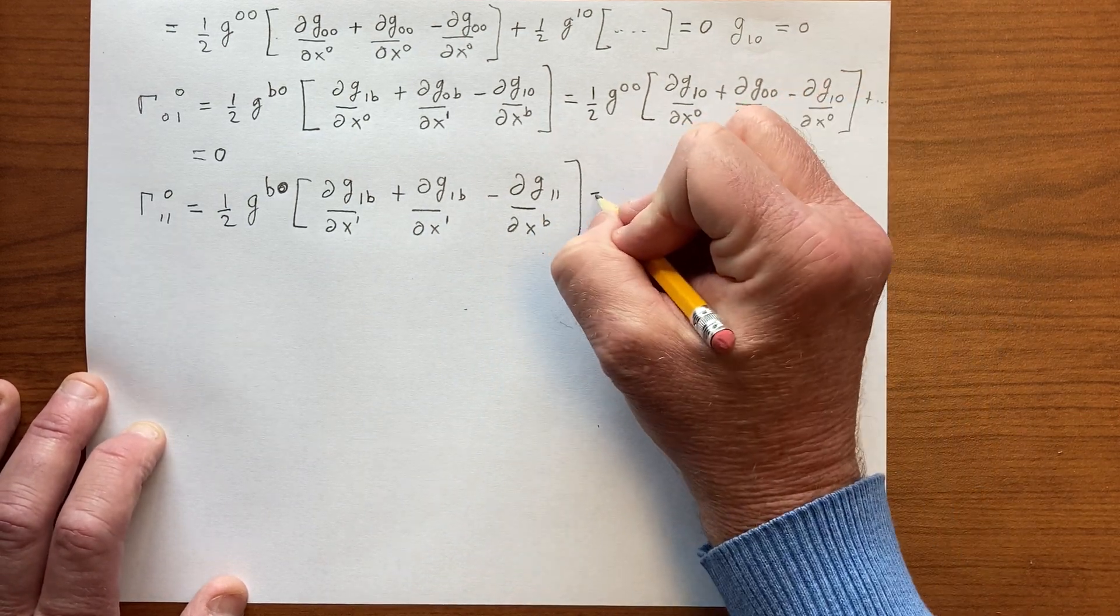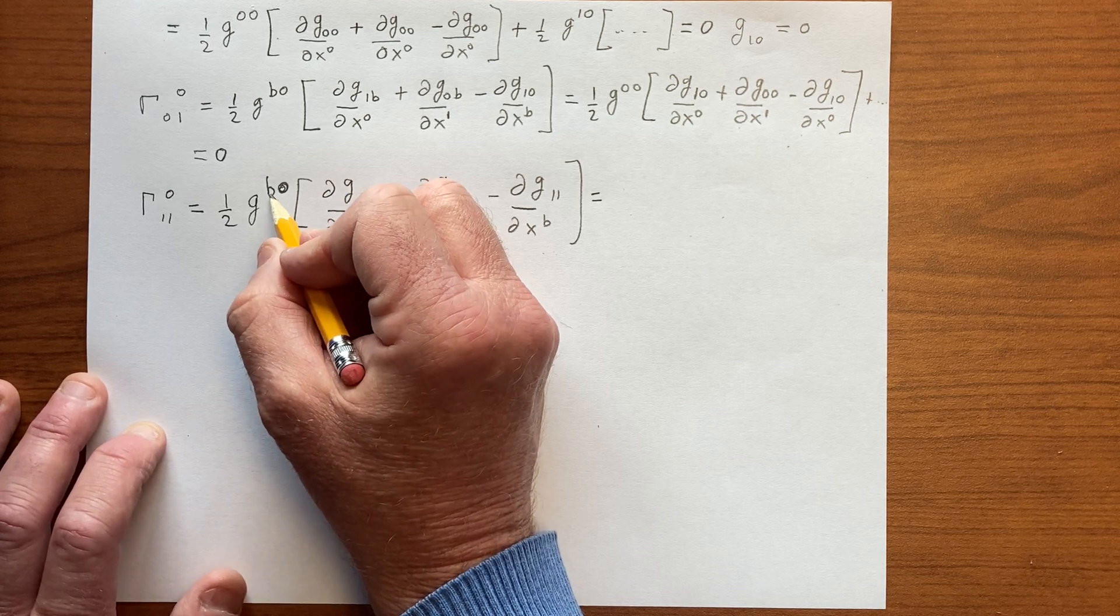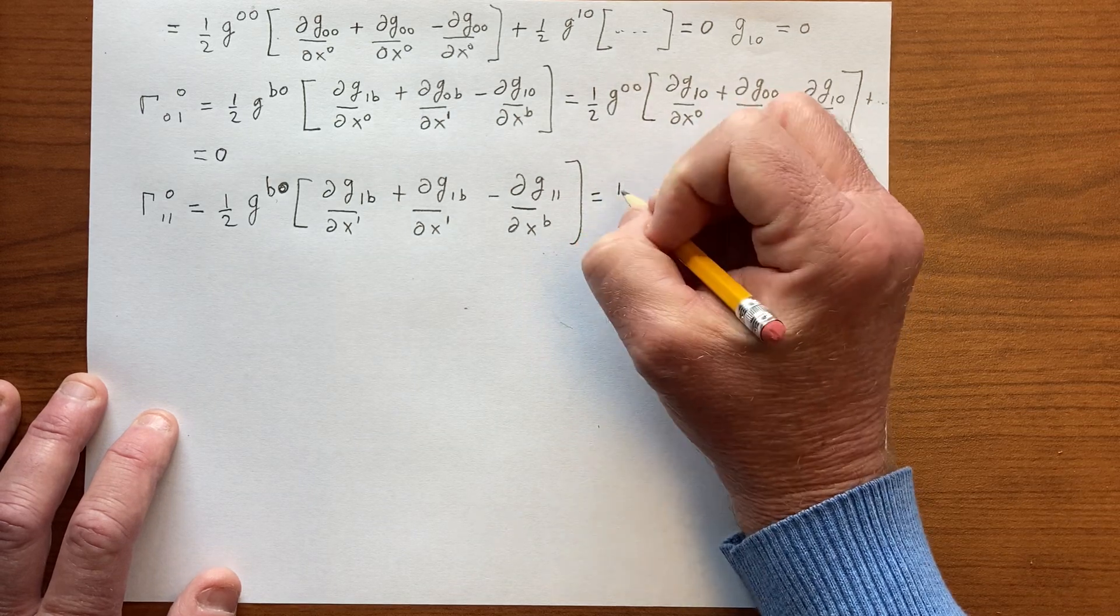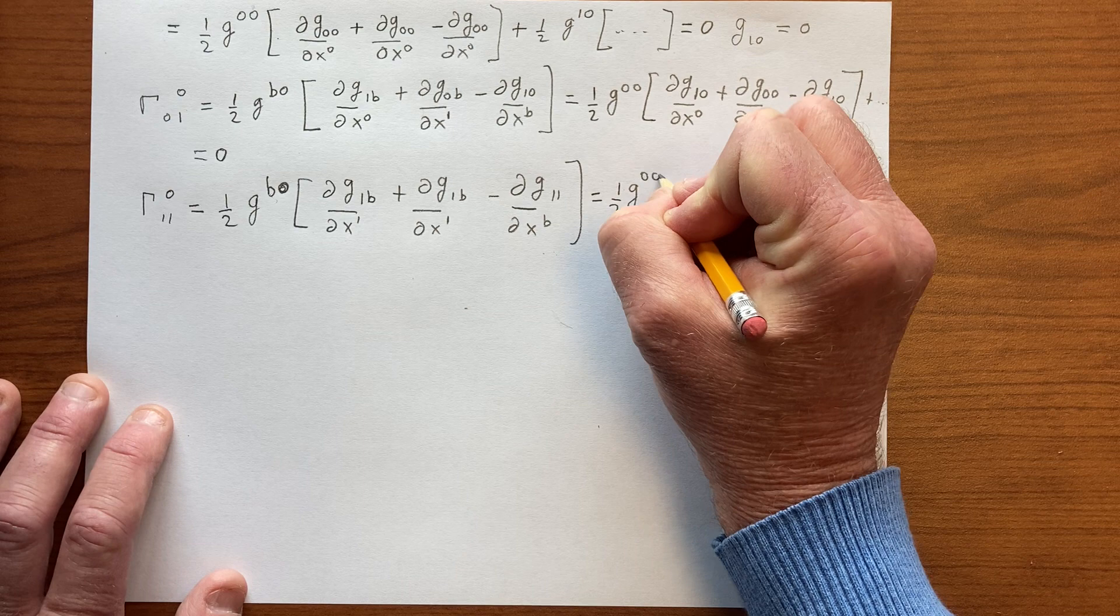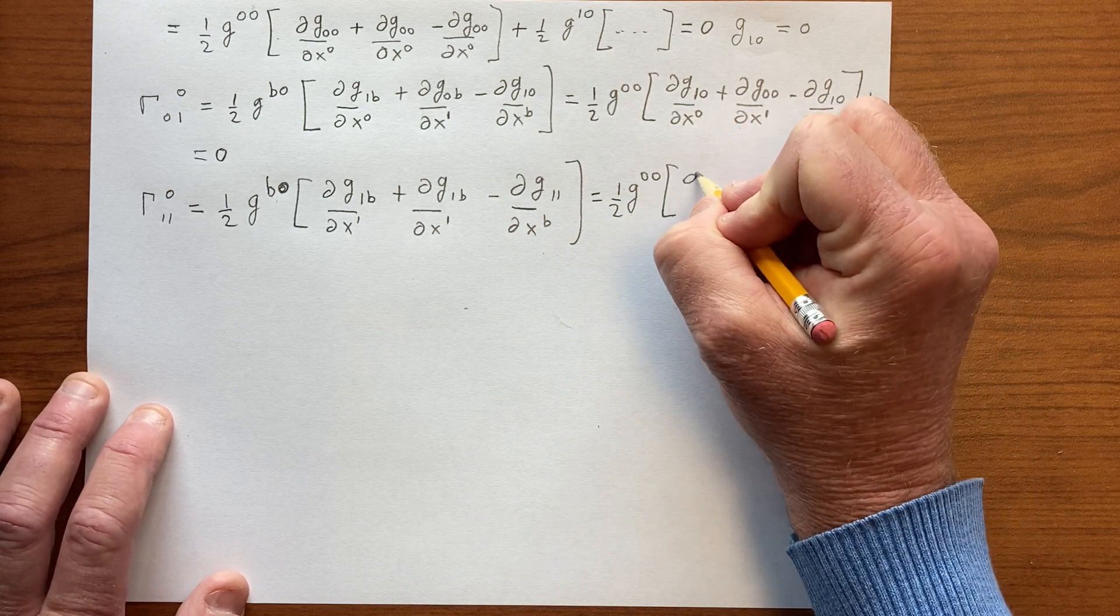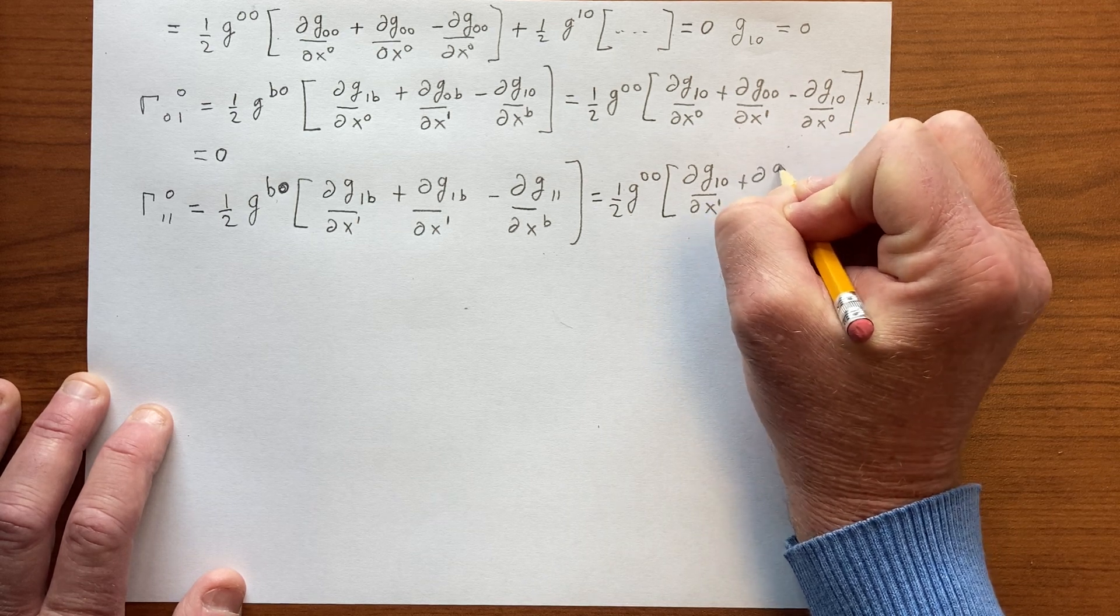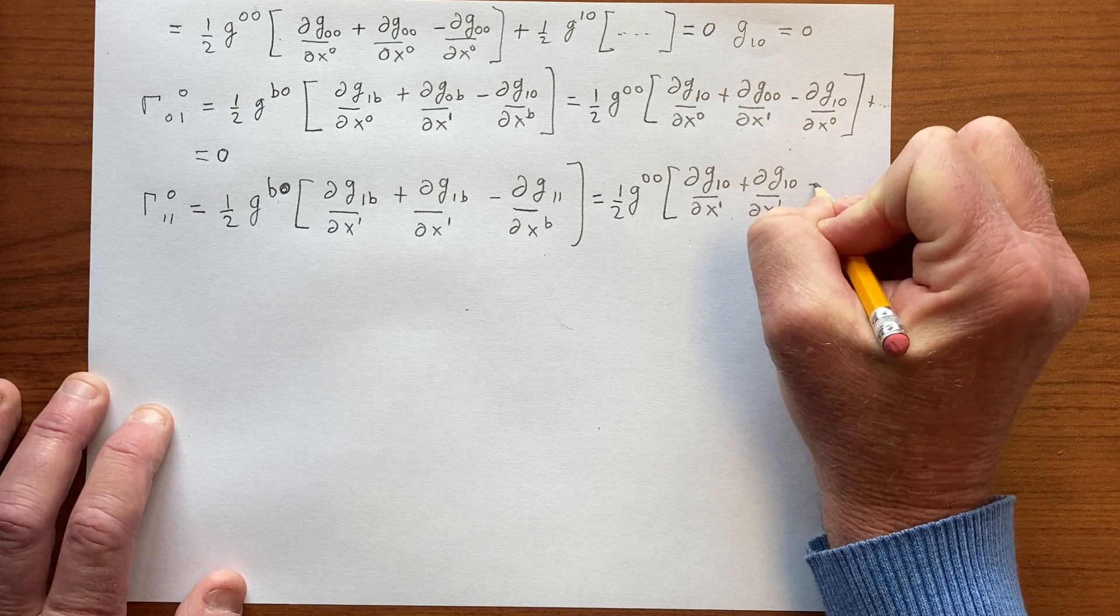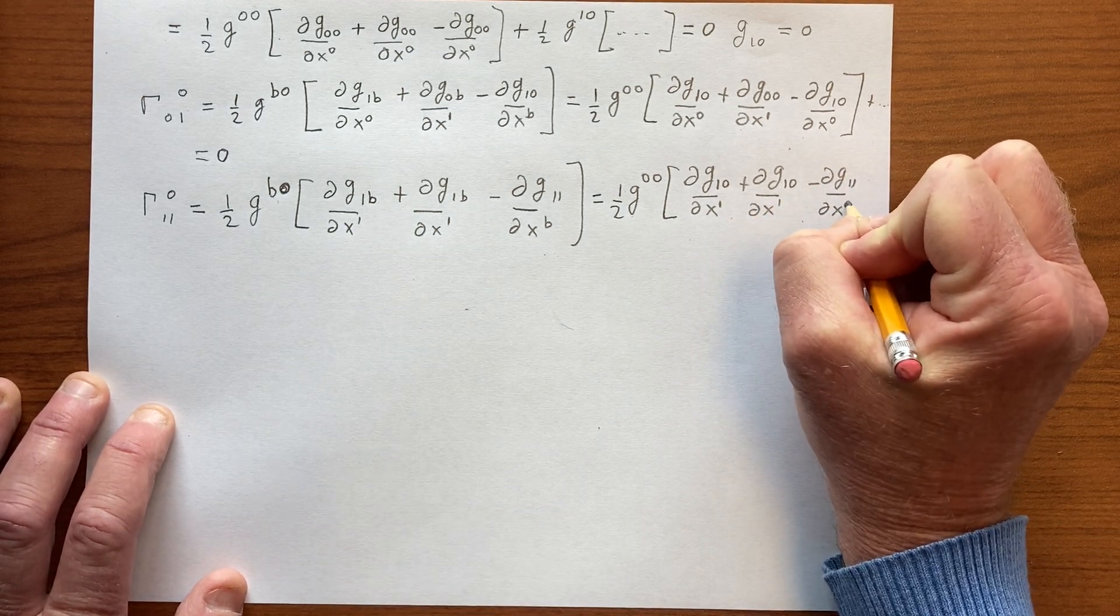So let's see what we have here. Again, b equals 0 is the only one we care about because the b equals 1 is 0. So here we have g^00 ∂g_10/∂x^1 plus same thing here, minus ∂g_11/∂x^0.